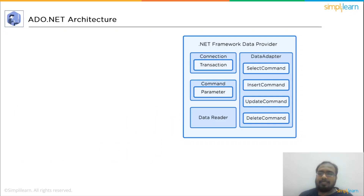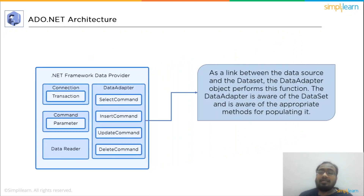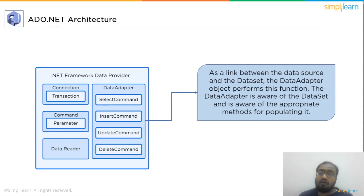The data adapter object is a link between the data source and the dataset. The data adapter is aware of the dataset and how to update it, and is also aware of the data source connection. It may also be used to manage the connection between your application and the underlying database tables, views, and stored procedures.